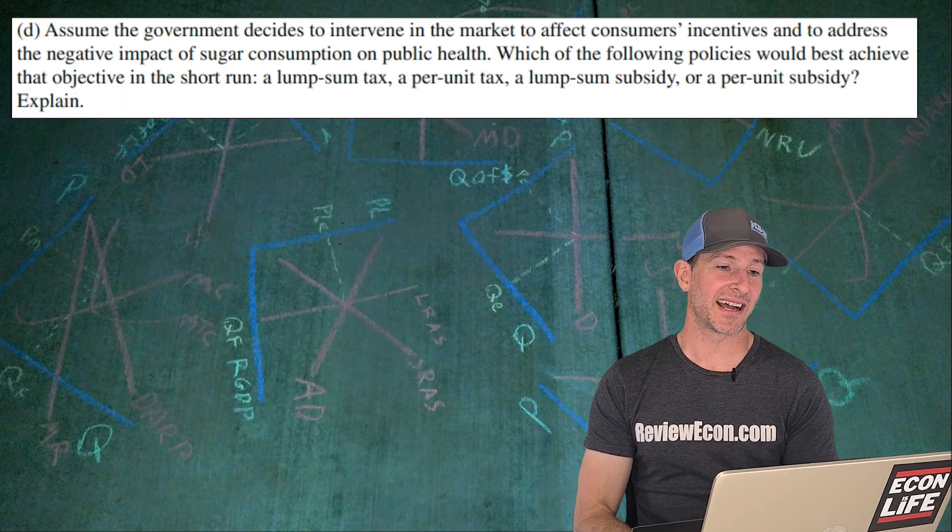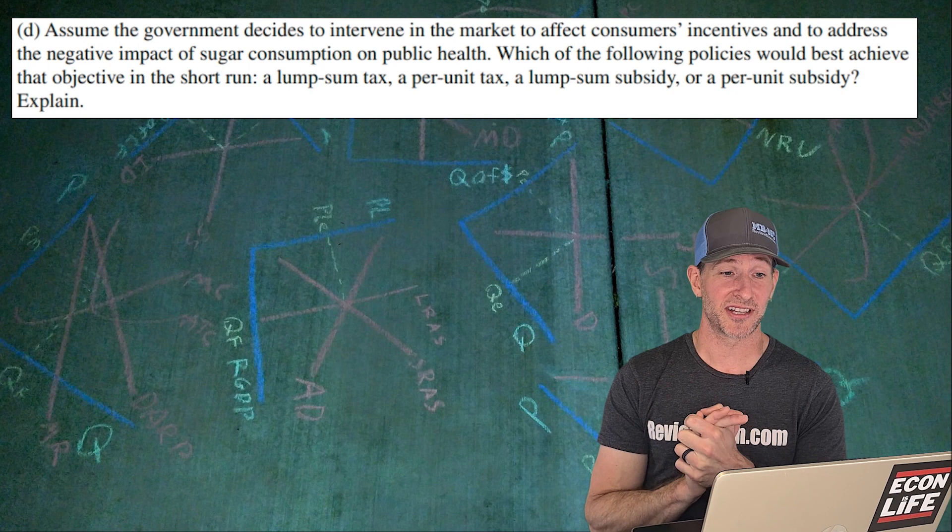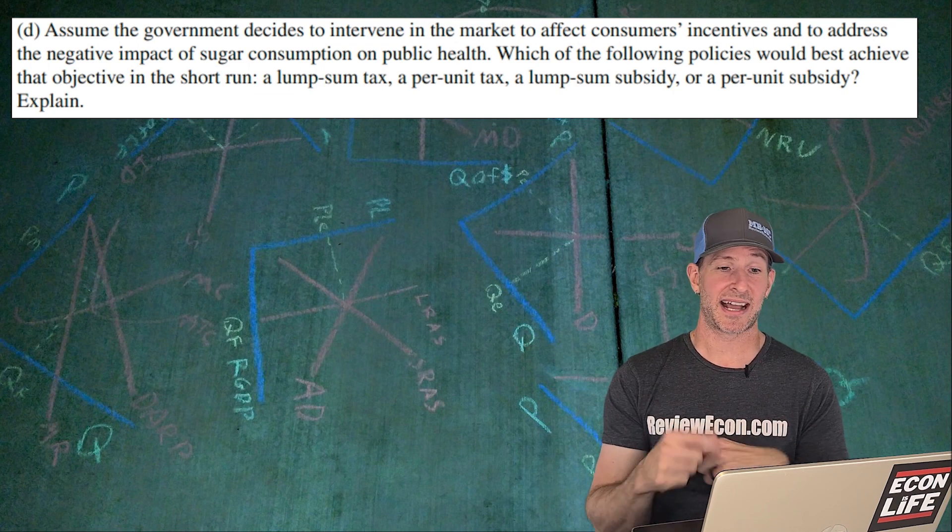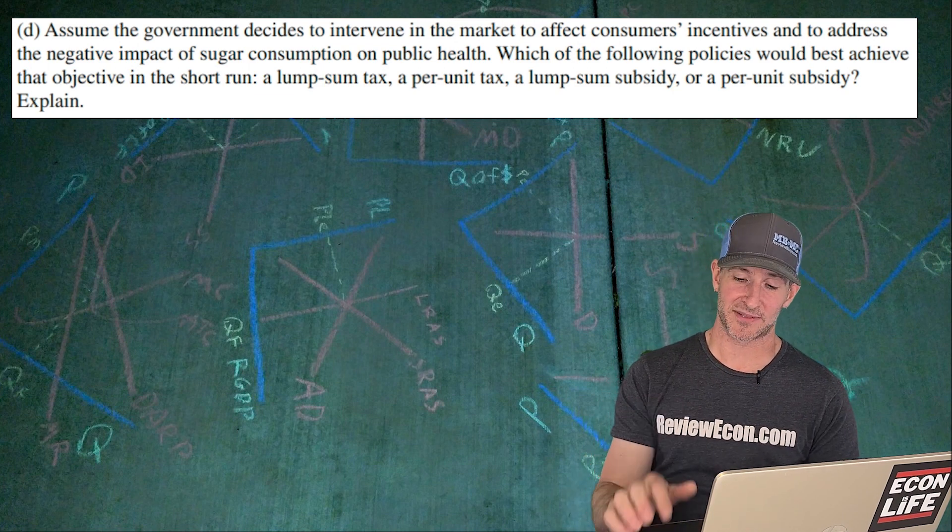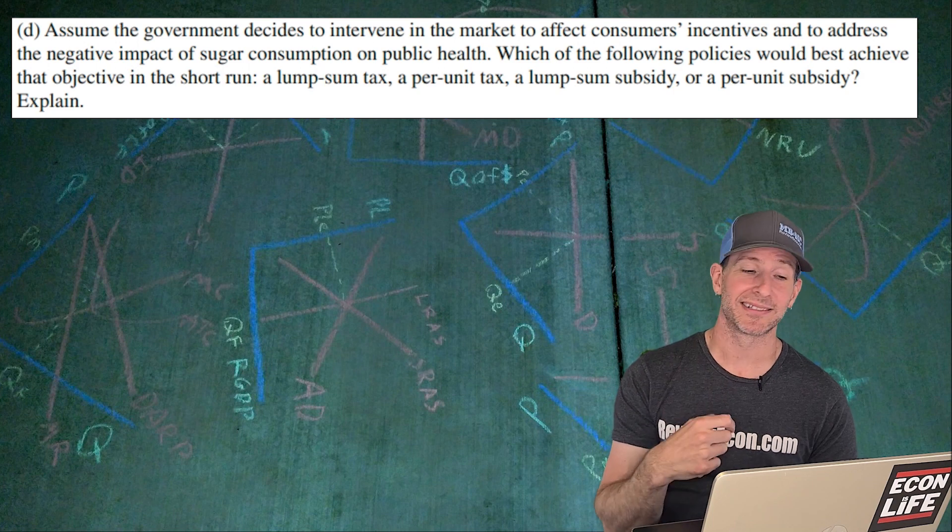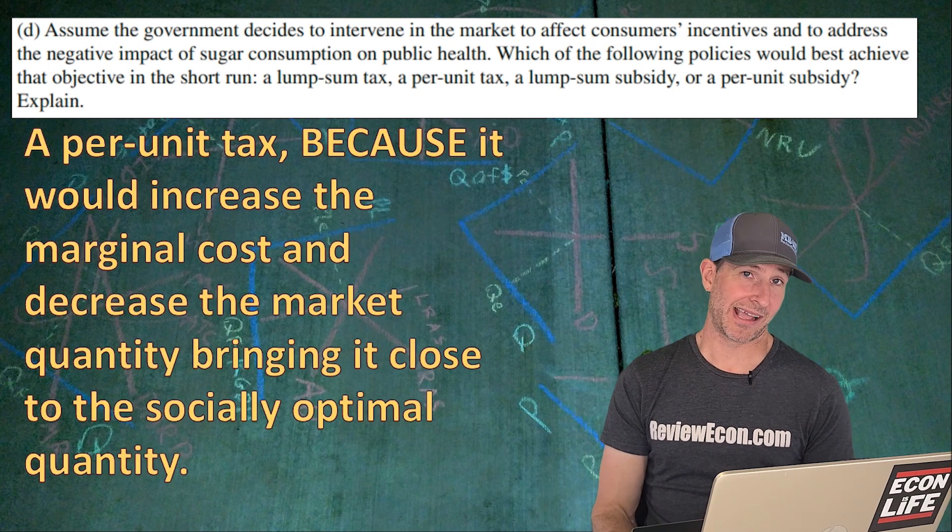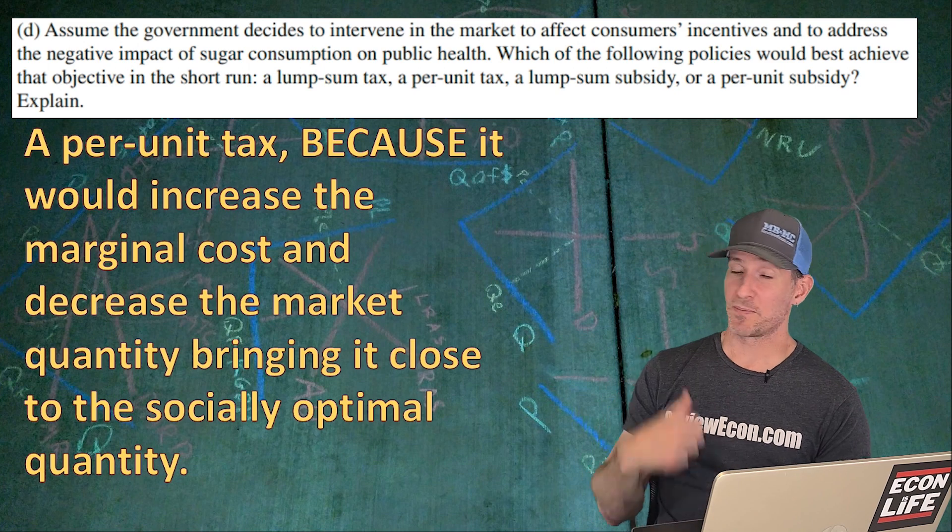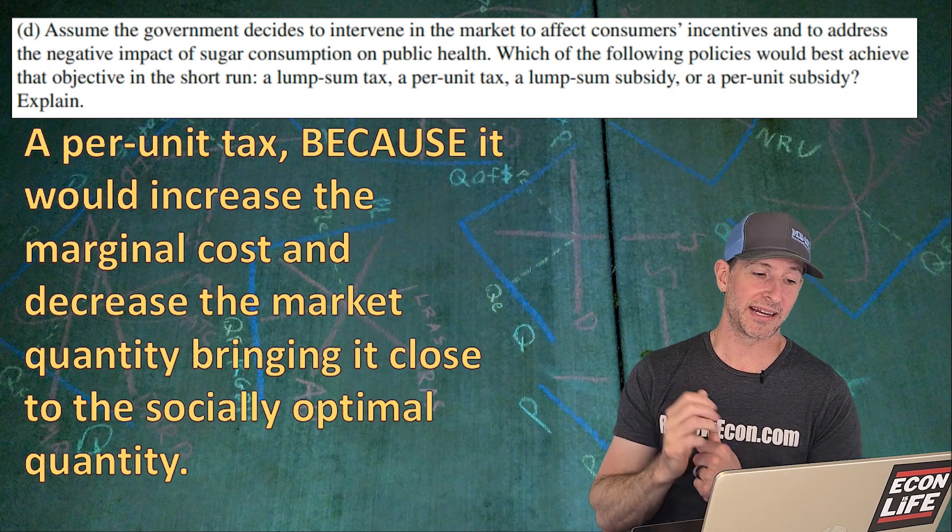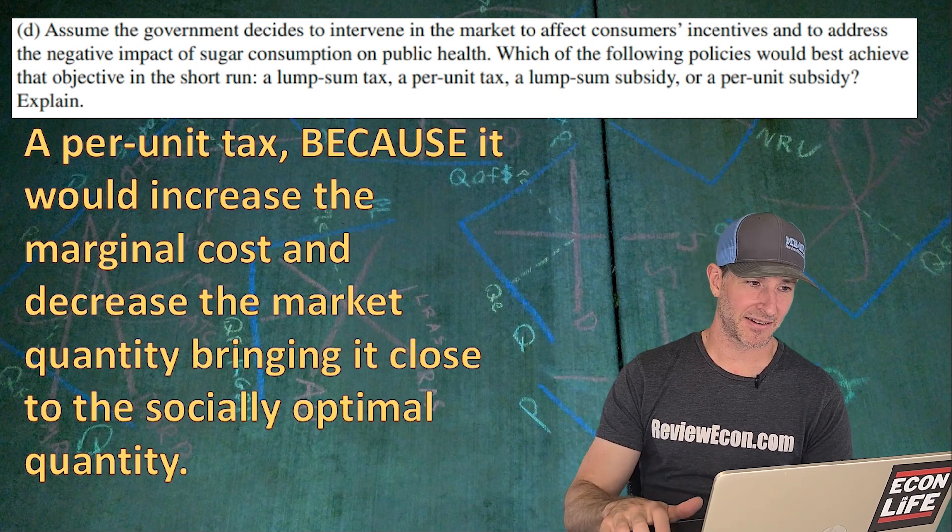On to the next one. Assume that government decides to intervene in the market to affect consumer incentives to address the negative impact of sugar consumption on public health. Which of the following policies would best achieve that objective in the short run? Lump sum tax, per unit tax, lump sum subsidy, or per unit subsidy. This is a negative externality. So per unit, not never lump sum, per unit, in this case tax, because it's a negative externality that will give us a quantity that's closer to the allocatively efficient quantity. So I put per unit tax because it would increase the marginal cost and decrease the market quantity, bringing it closer to the socially optimal quantity. There you go.